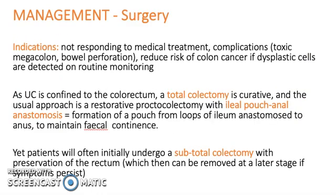For a surgical approach, the indications are if the patient is not responding to medical treatment, if they have complications, or for reduced risk of colon cancer. As UC is confined to the colorectum, a total colectomy is curative. The usual approach is a restorative proctocolectomy with ileoanal pouch anastomosis, though patients will often initially undergo a subtotal colectomy with preservation of the rectum.